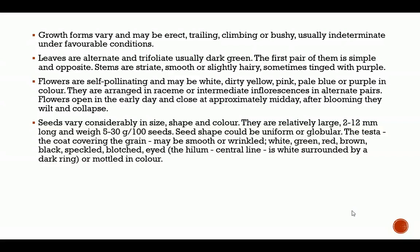Stems are straight, smooth or slightly hairy, and sometimes tinged with purple. Flowers are self-pollinating and may be white, dirty yellow, pink, pale blue, or purple in colour. They are arranged in raceme or intermediate inflorescence in alternate pairs. Flowers open early in the day and close at approximately midday, after which they wilt and collapse.